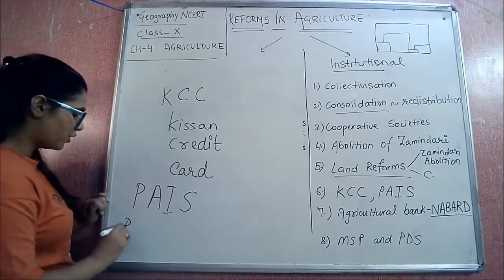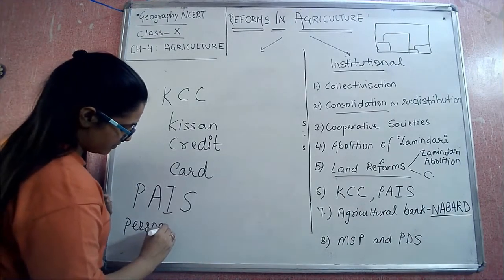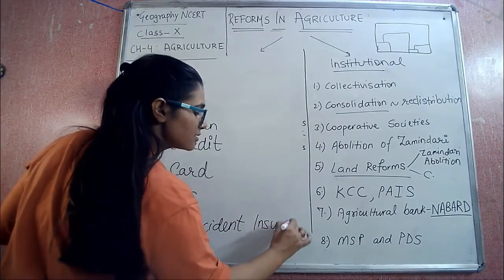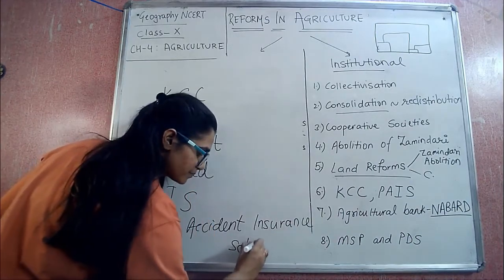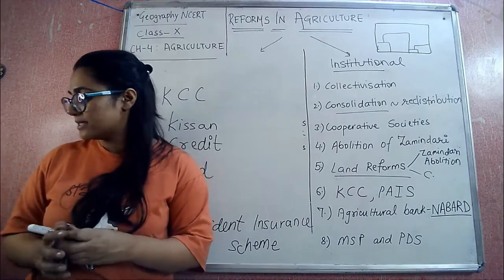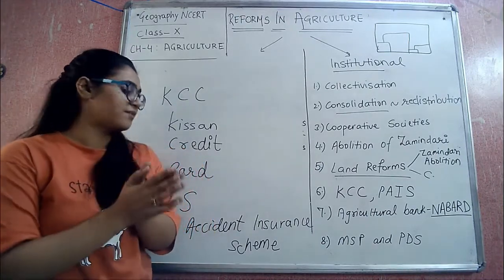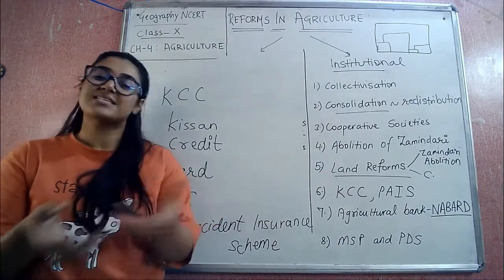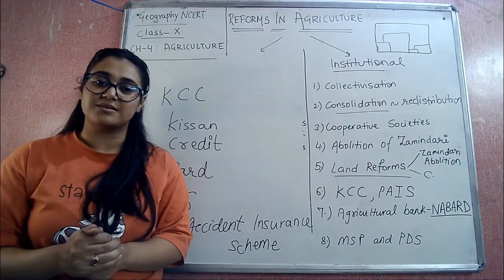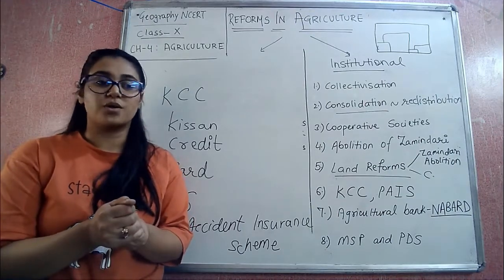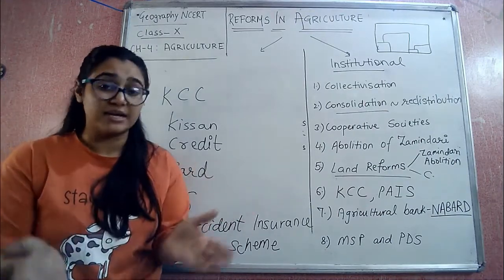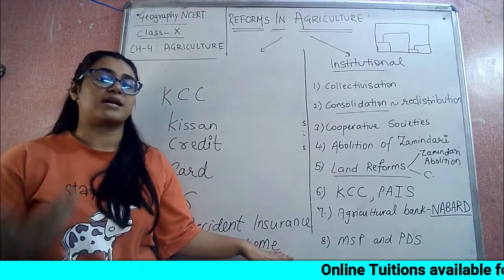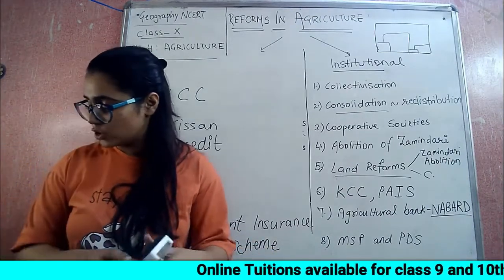Next is PAIS - Personal Accident Insurance Scheme. Farmers use pesticides and insecticides full of chemicals - sometimes the farmer's hands may burn, or there may be an accident during some agricultural activity due to tractors or anything. So this personal accident insurance scheme covers that.